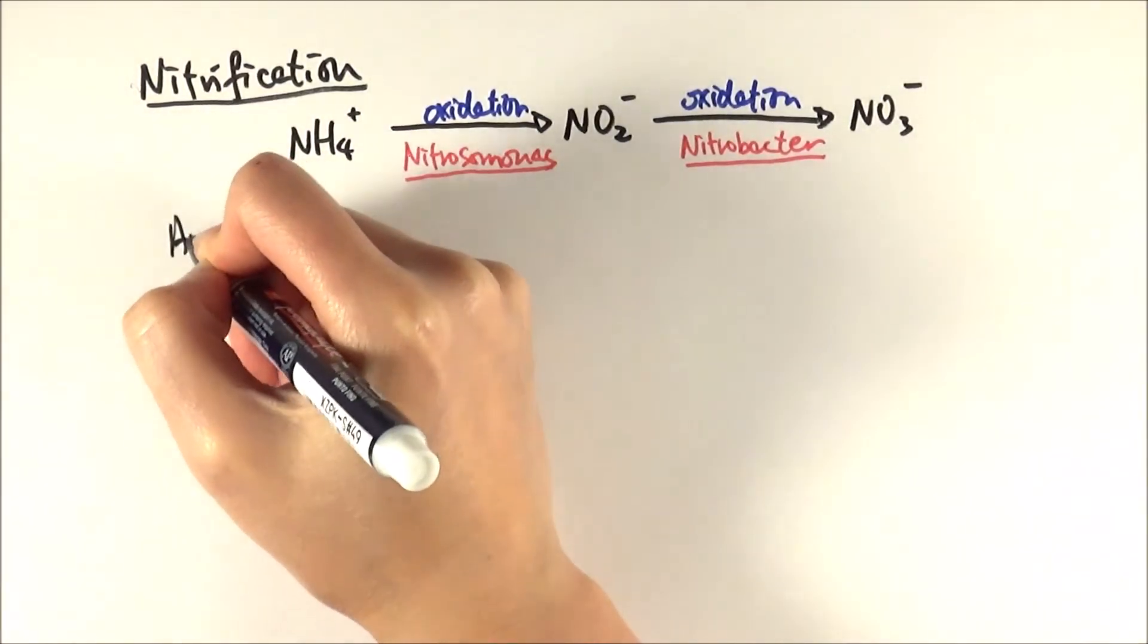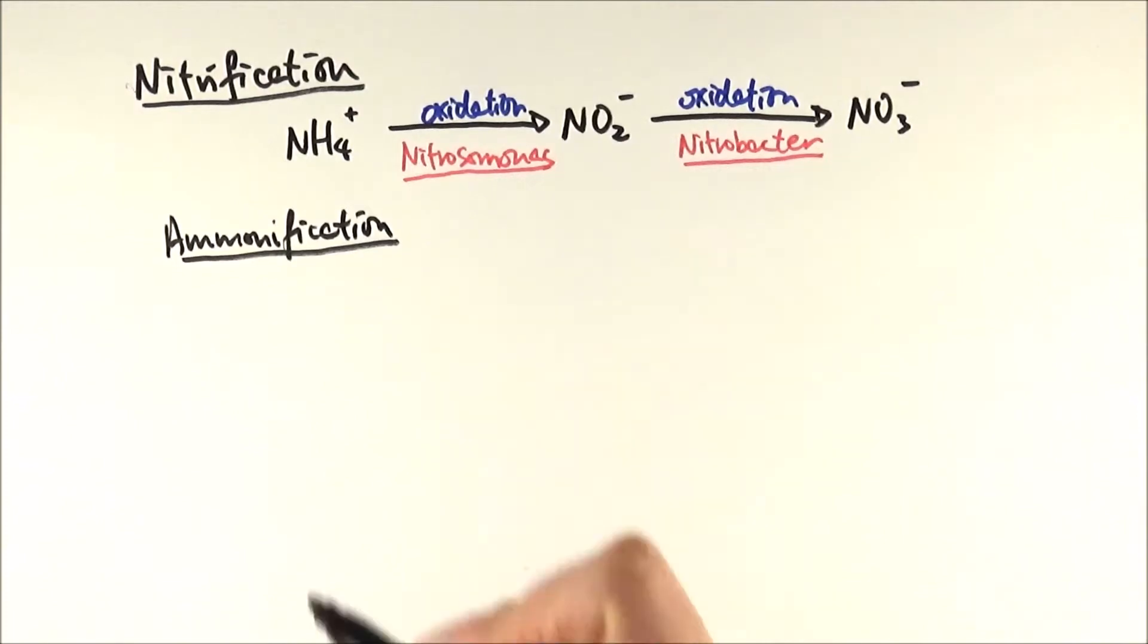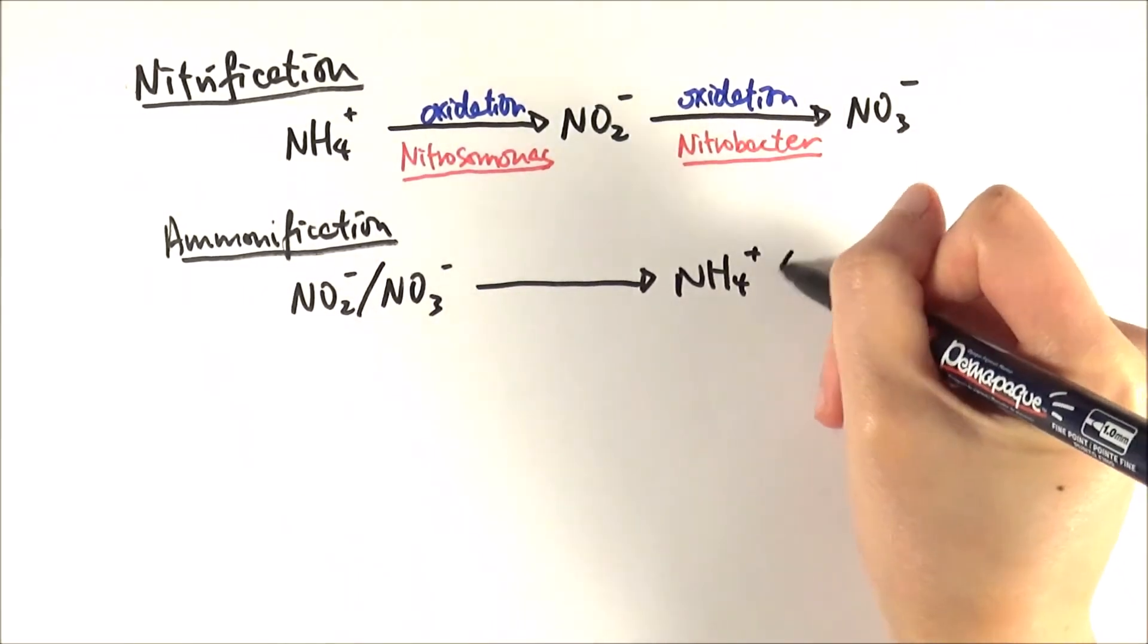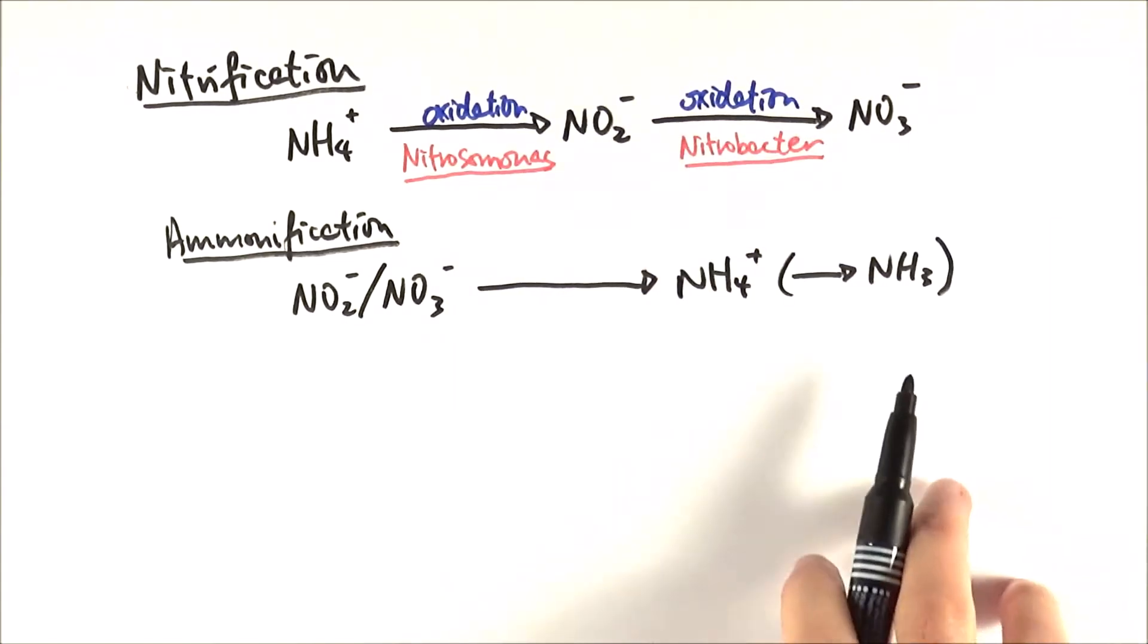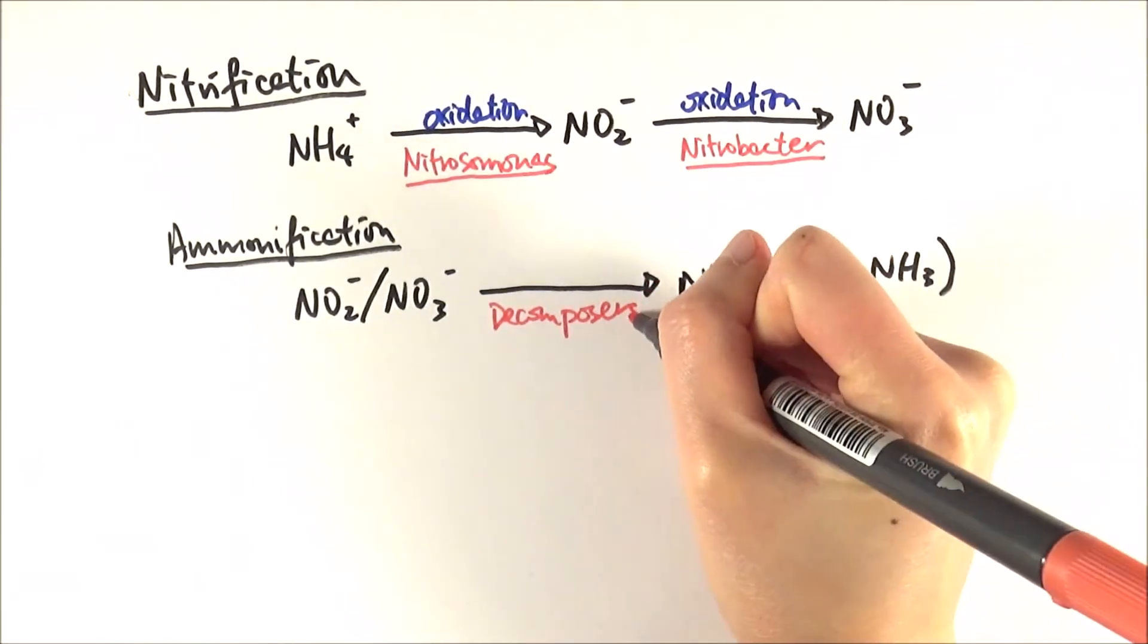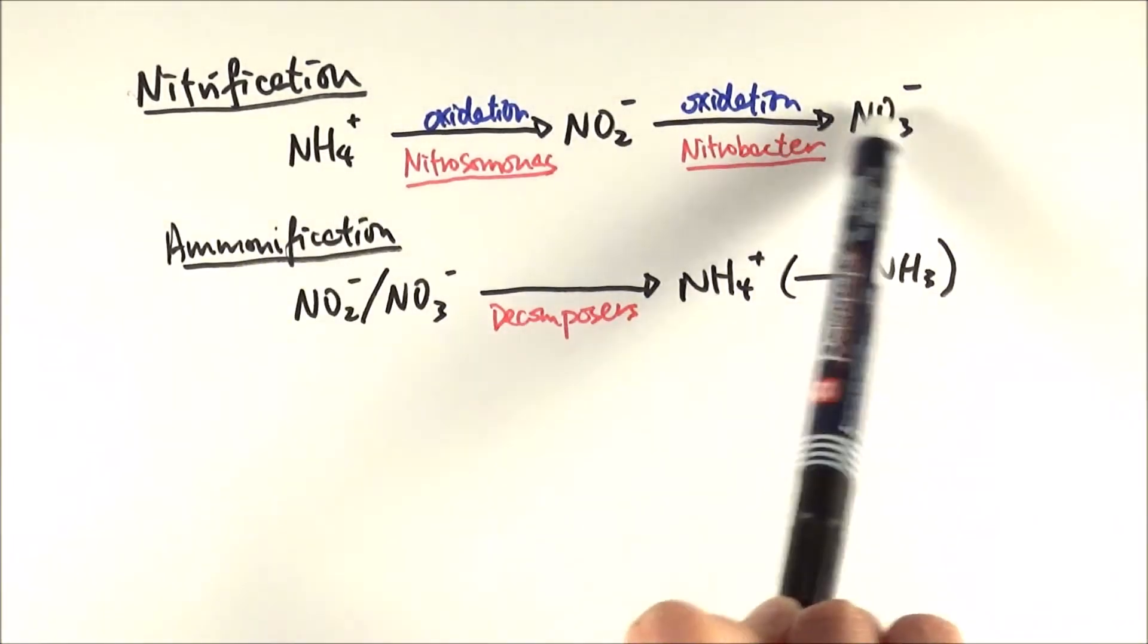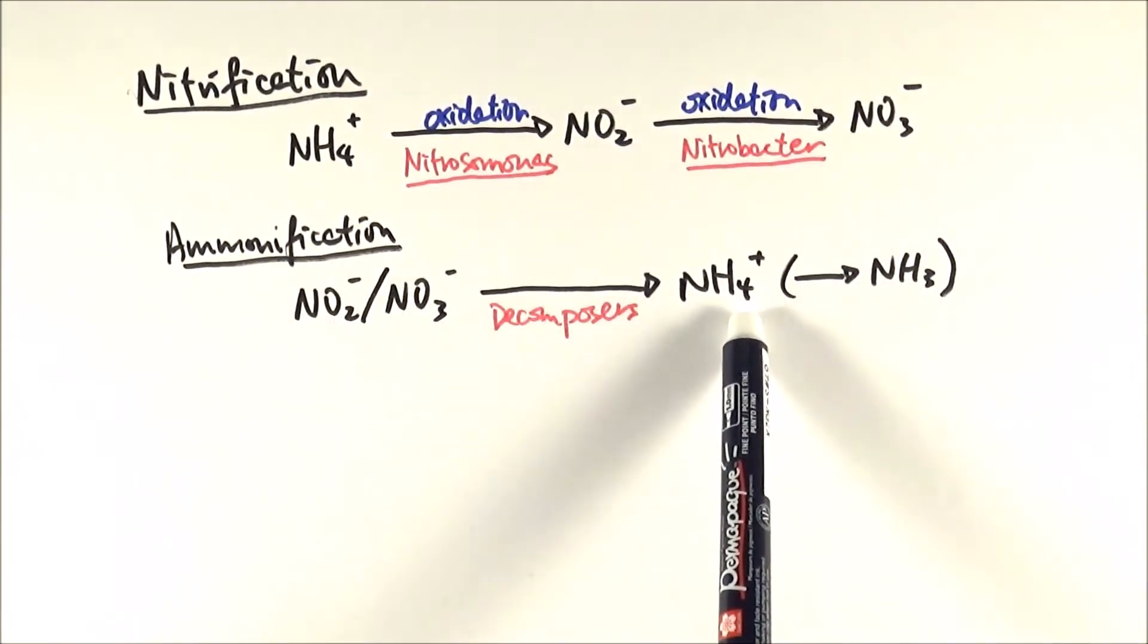The other process is called ammonification. Now ammonification is actually the opposite of nitrification, where we have nitrite or nitrate converted into ammonium, and actually ammonium can then be converted into ammonia, which is the actual molecule or chemical of it, if needed. This particular reaction is done by decomposers, for example, the other types of bacteria. So one way to memorize it is that nitrification is making nitrite or nitrate, so that's why it turns from ammonium to these two forms. Ammonification is making ammonium, and these two reactions are the reverse in some sense.